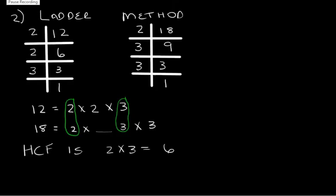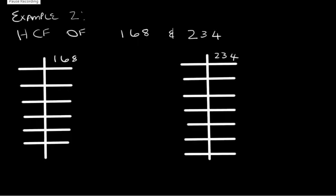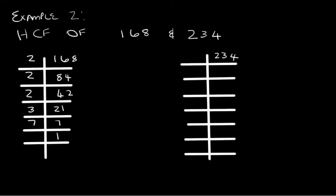Let's do another example — this time using bigger numbers. The first method is suitable for smaller numbers, so let's try the bigger numbers. Let's find the HCF of 168 and 234. We need to write each one as the product of its prime factors, dividing by prime numbers. For 168: divide by 2 to get 84, divide by 2 to get 42, divide by 2 to get 21, divide by 3 to get 7, and 7 divided by 7 is 1.